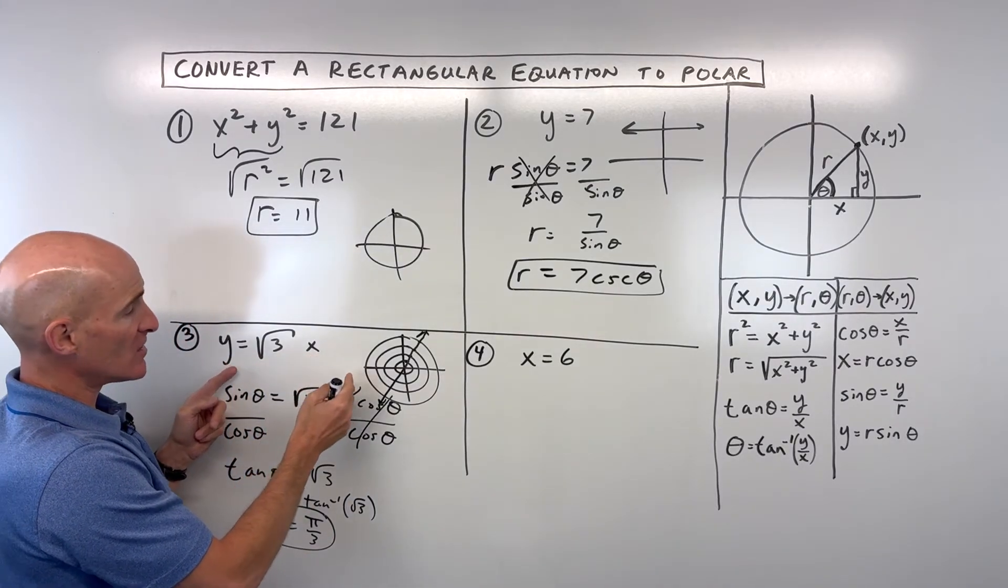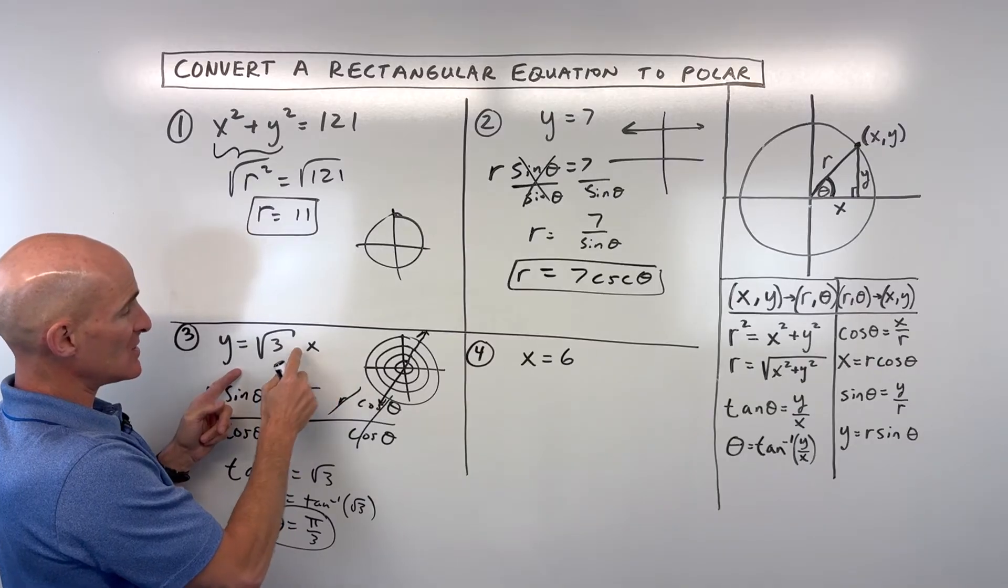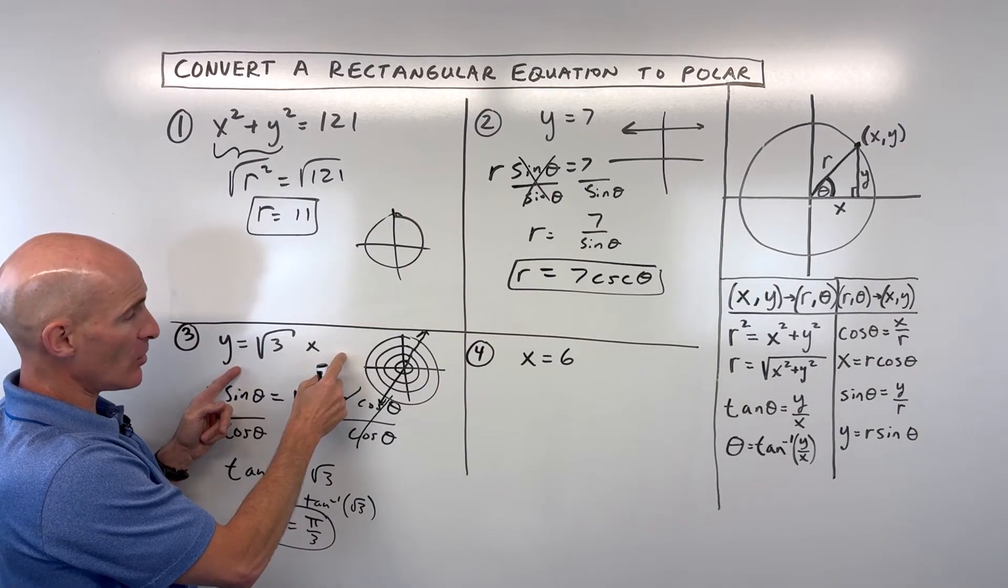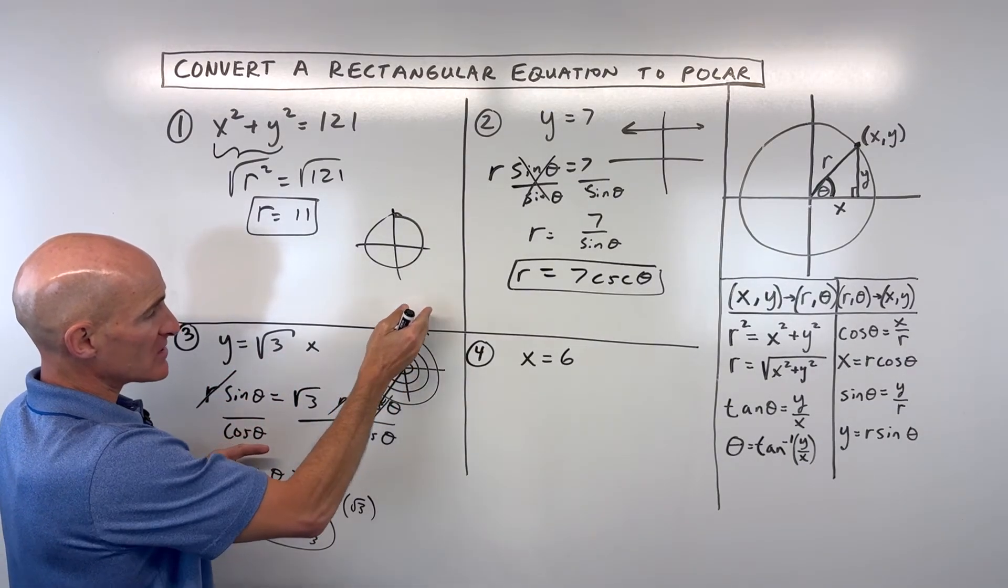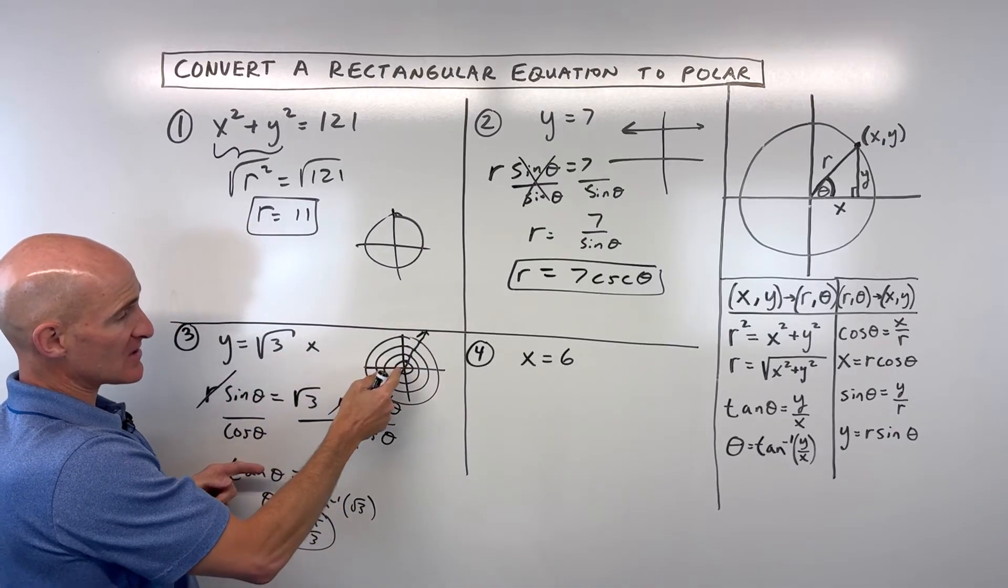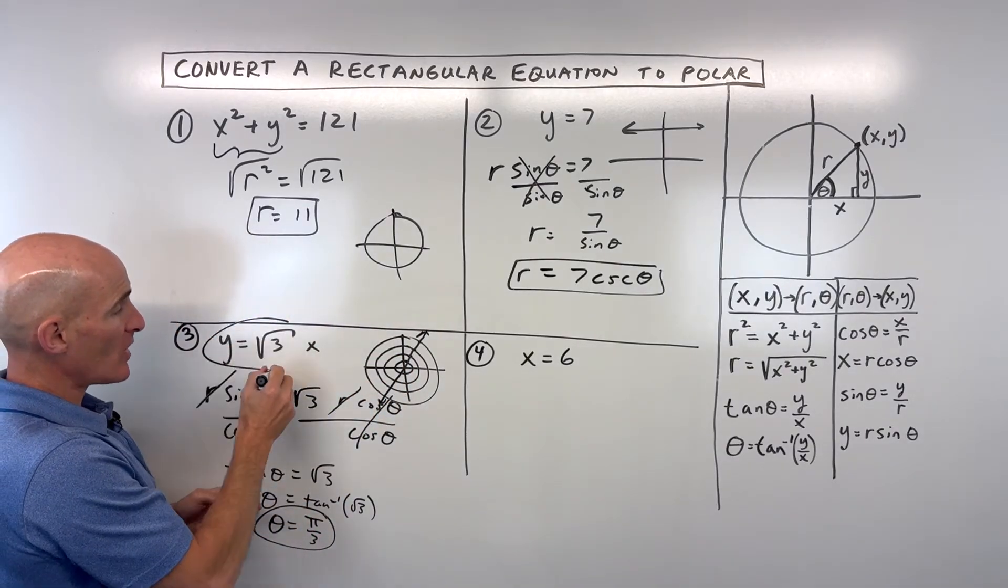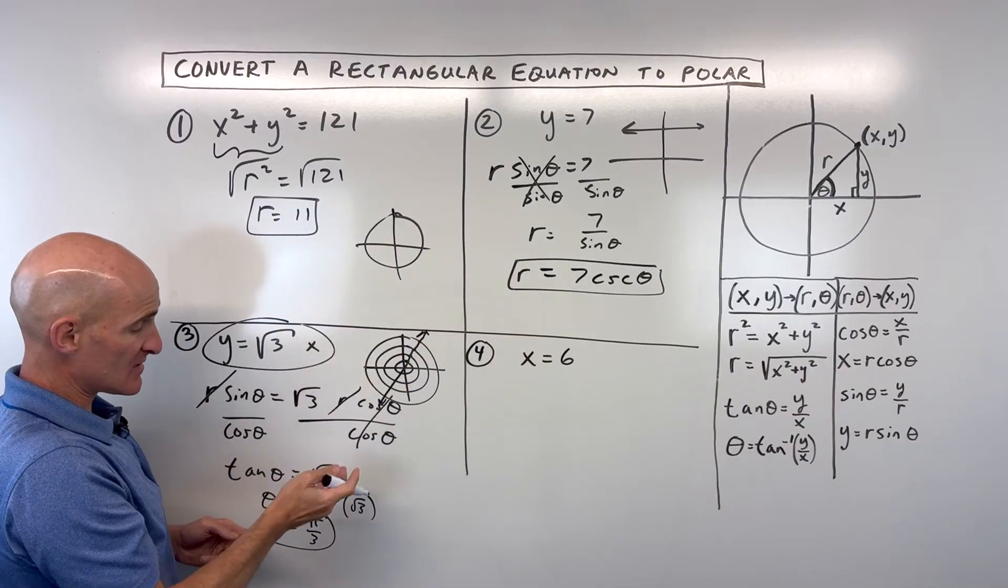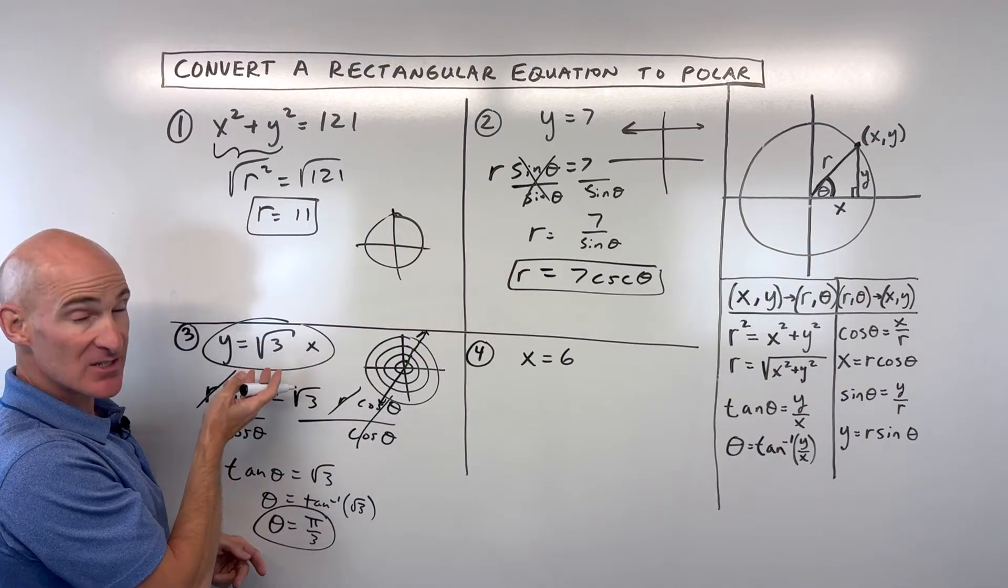You can see we're getting a line, and that's what this is here, y equals square root of 3x. So it's a line that goes through the origin, because you can see y equals mx plus b. The b is 0. And the slope is square root of 3 over 1. That's the slope of this line. So two different ways to describe this same line. One is in polar, one is in rectangular.